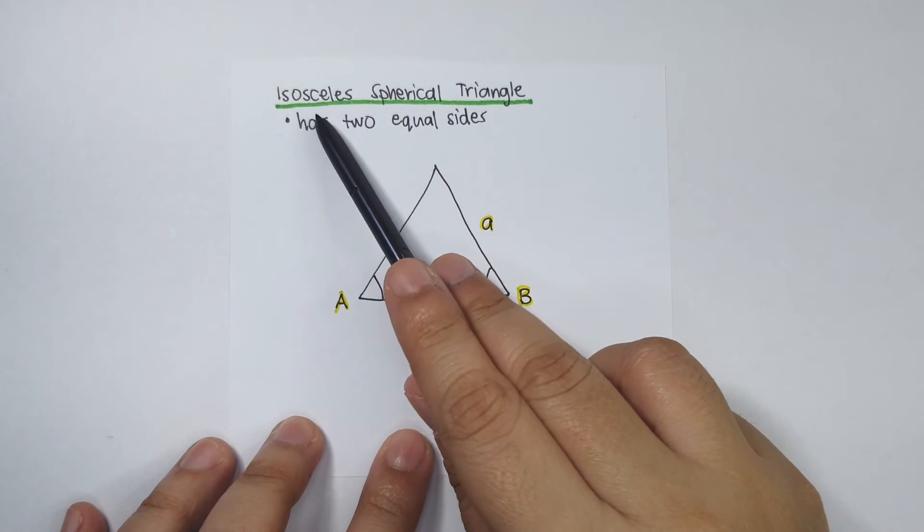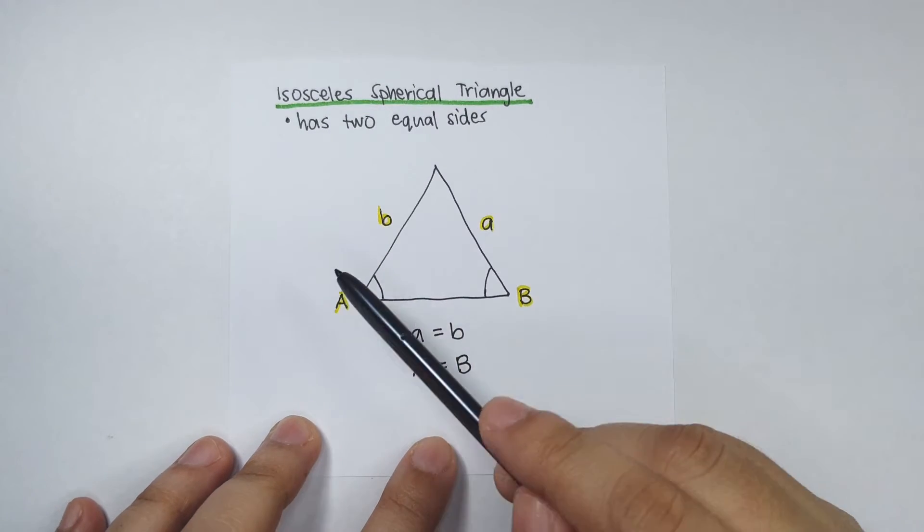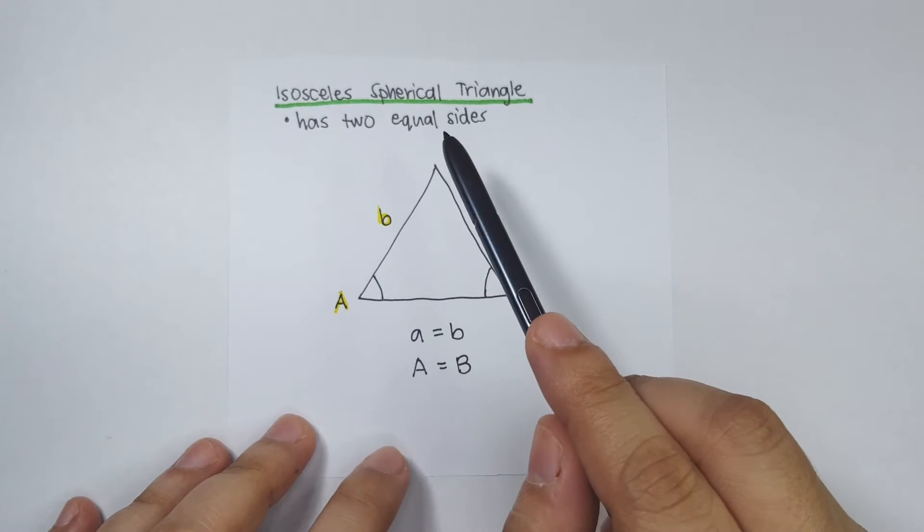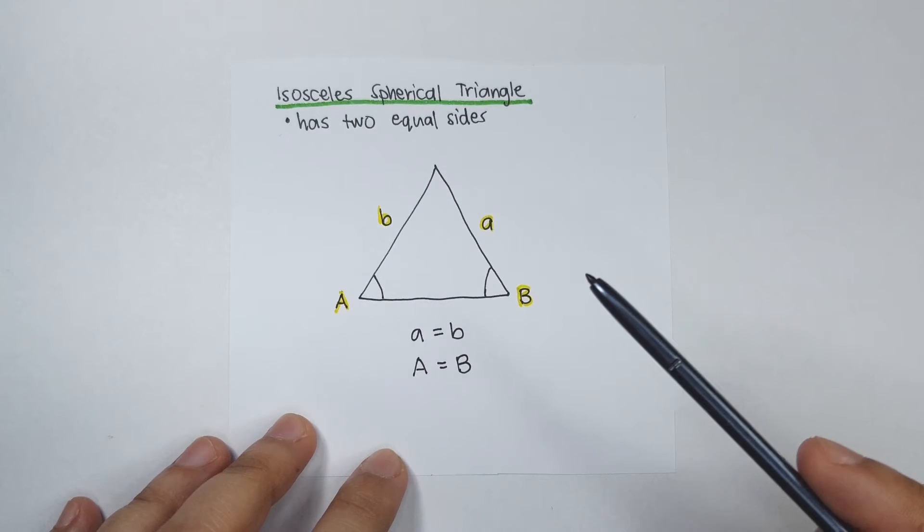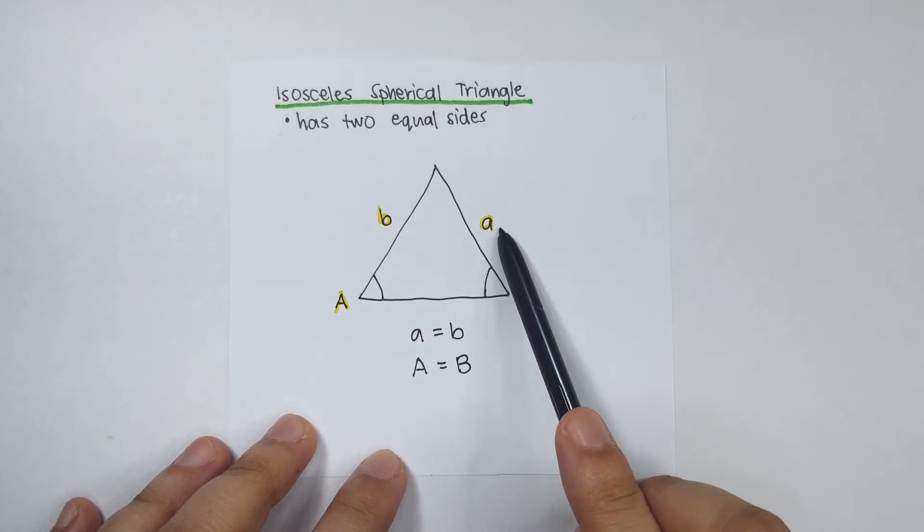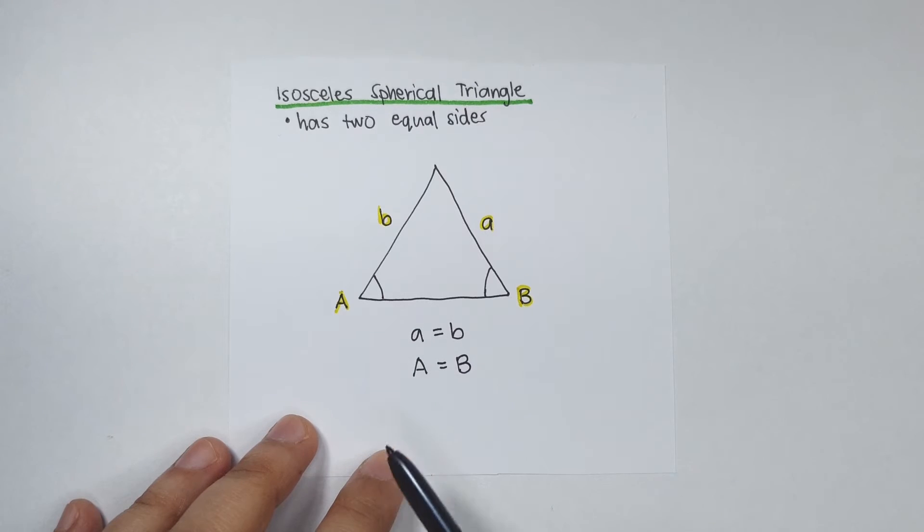Now, let's learn how to solve an isosceles spherical triangle. An isosceles spherical triangle is a triangle that has two equal sides. If these two sides are equal, then these two angles are equal as well.